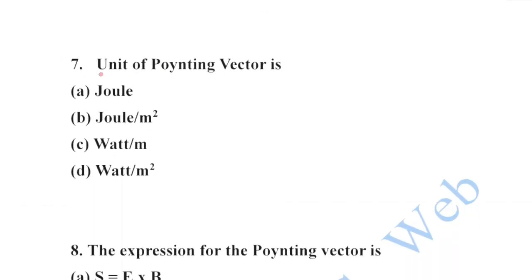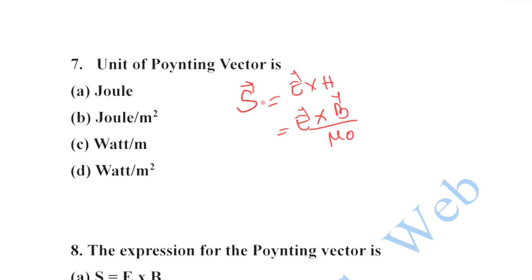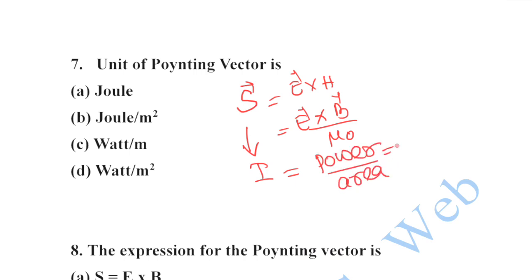Next: the SI unit of the Poynting vector. The Poynting vector S equals E cross H, or E cross B divided by μ₀. The magnitude of the Poynting vector is intensity, which is power per unit area, or energy per unit area per unit time. So the unit is watts per meter squared. Option D is your correct option.